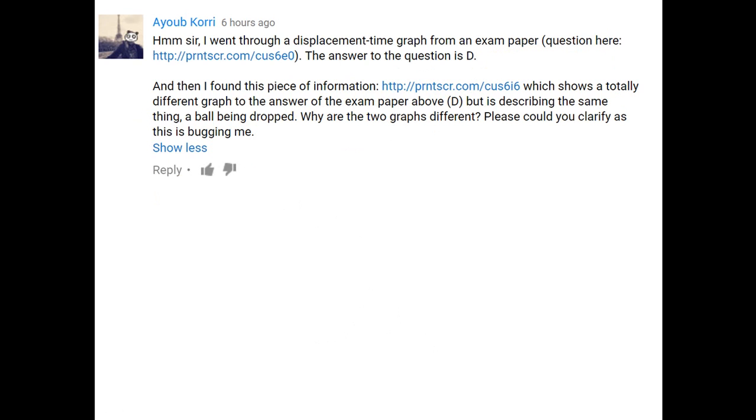So Ayubi Kori sent me this. I went through a displacement time graph from an exam paper and the answer was D. Then I found a piece of information which shows a totally different graph to the answer in the exam paper, but describes the same thing, a ball being dropped. Why are the two graphs different? Can you please clarify this as it's bugging me?